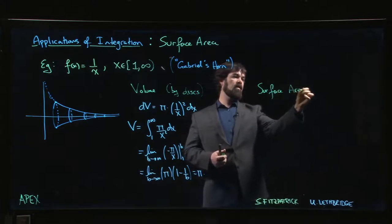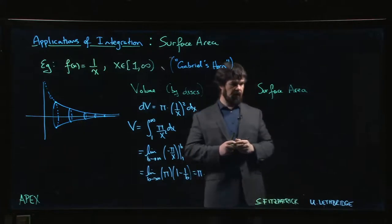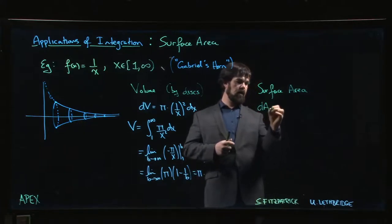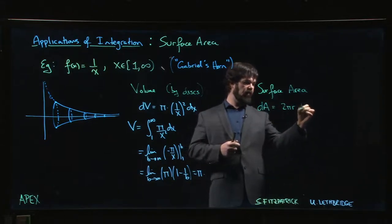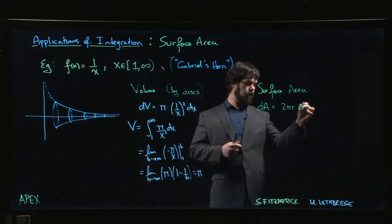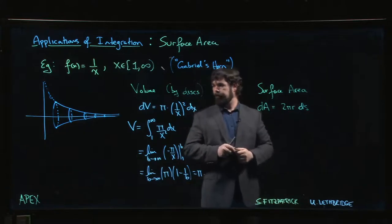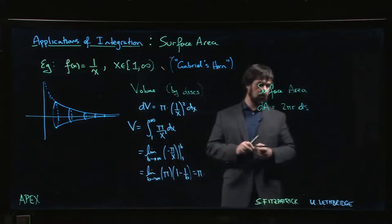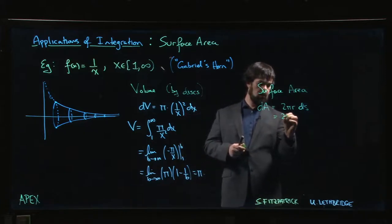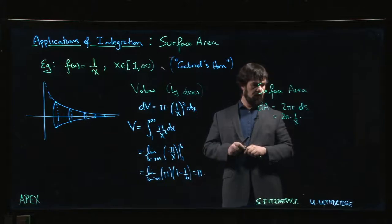What is the surface area? For the surface area, our dA, we do 2πr times ds. As always, ds is the arc length element, and we've got everything in terms of x, so let's do it in terms of x.